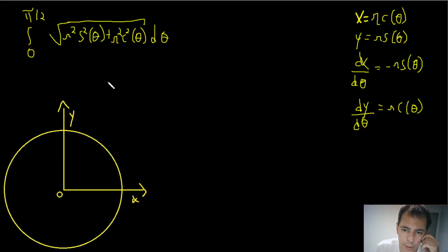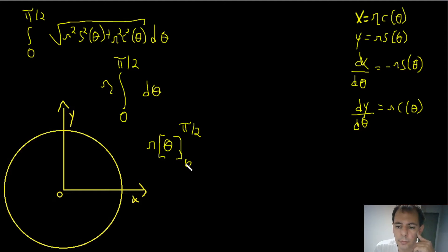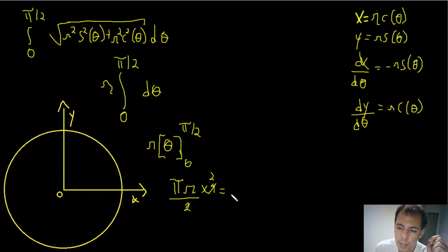Since R is a constant — the radius of the circle — we pull it outside the integral. We're left with R times the integral of dθ from 0 to π/2, which is just R times θ evaluated from 0 to π/2. Plugging in θ = 0 gives zero; plugging in π/2 gives R·π/2. Multiplying the whole thing by 4 gives 4 · (Rπ/2), and the 4 and 2 simplify to leave 2πR.